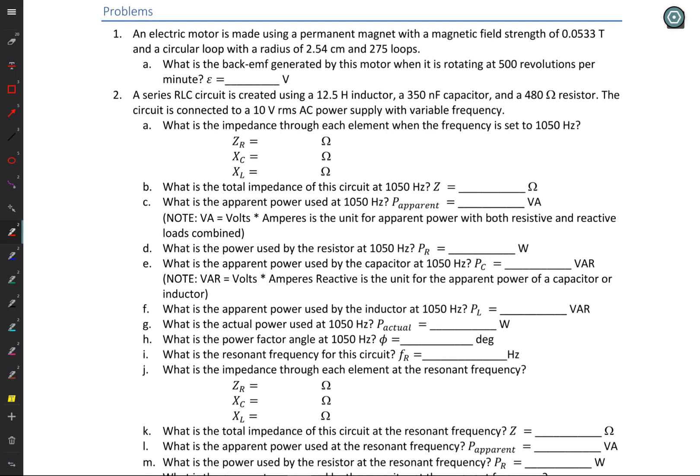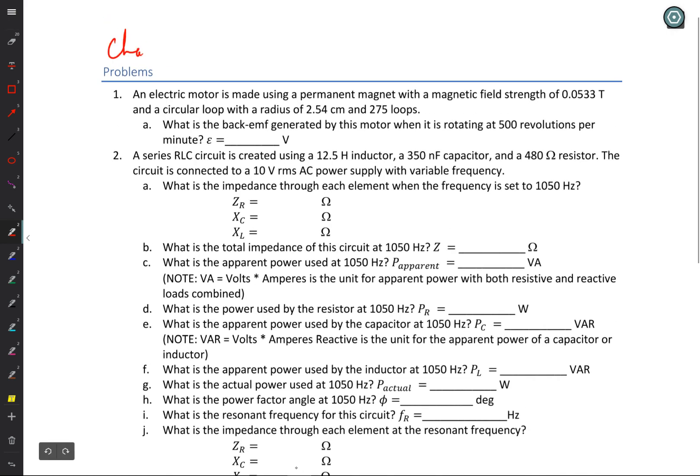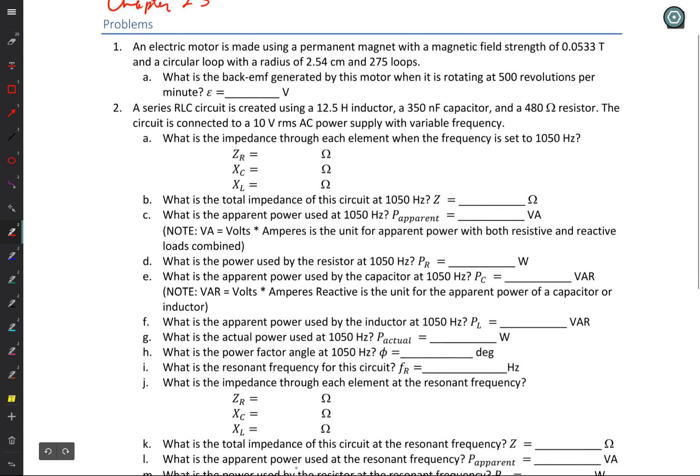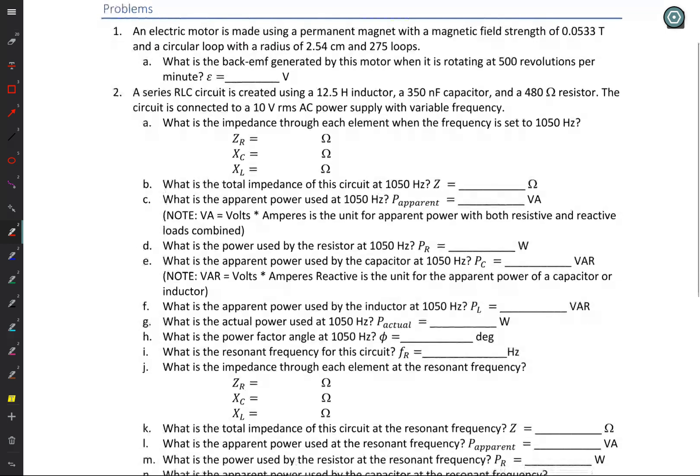All righty, chapter 23. Look at our review sheet problems here. The first one: an electric motor is made using a permanent magnet with a magnetic field strength of 0.0533 teslas and a circular loop with a radius of 2.54 centimeters and 275 loops. That should look familiar because those are the same numbers we have from the problem in chapter 22. Now, the question asks, what is the back EMF generated by this motor when it is rotating at 500 revolutions per minute?